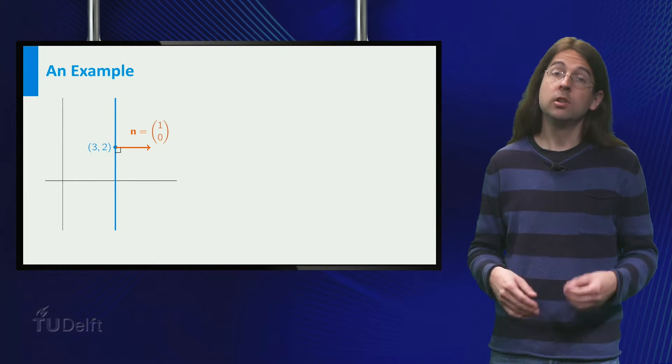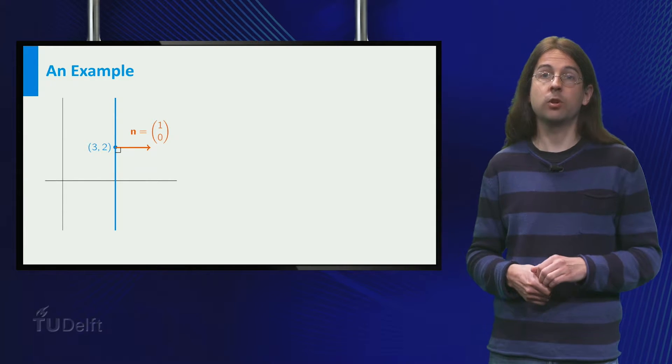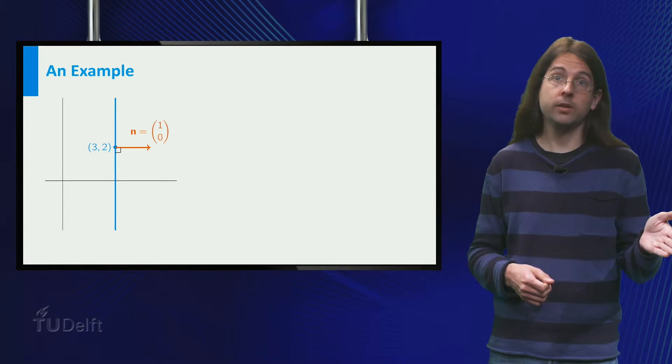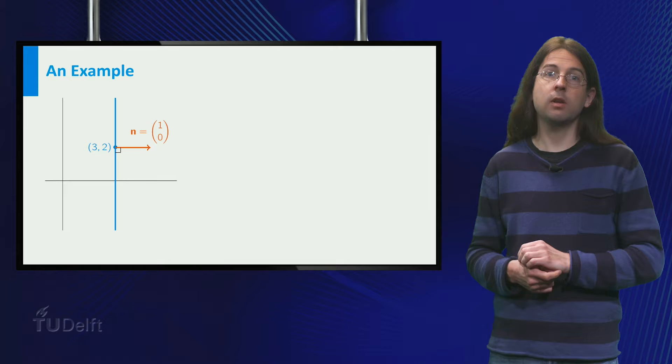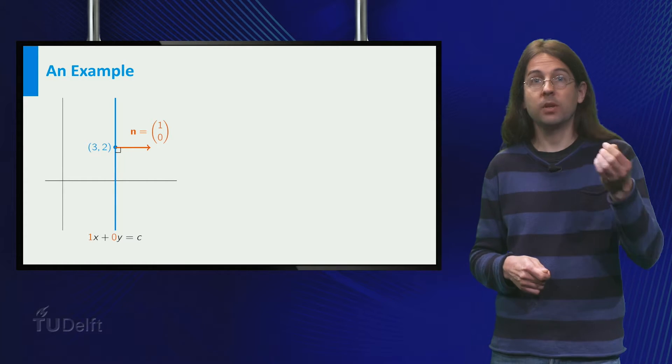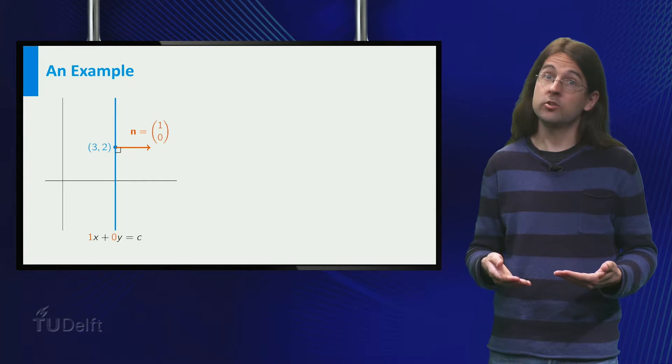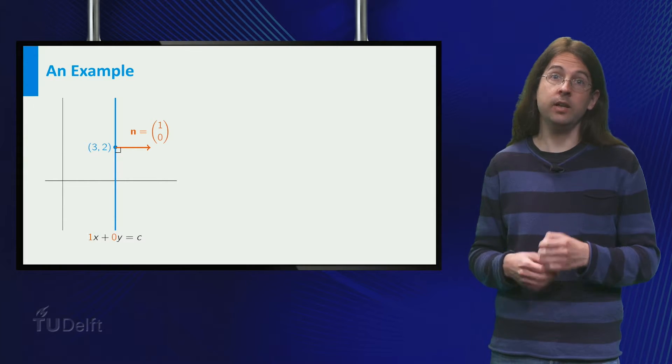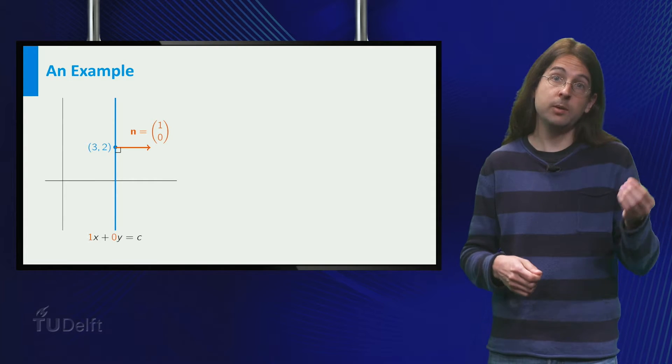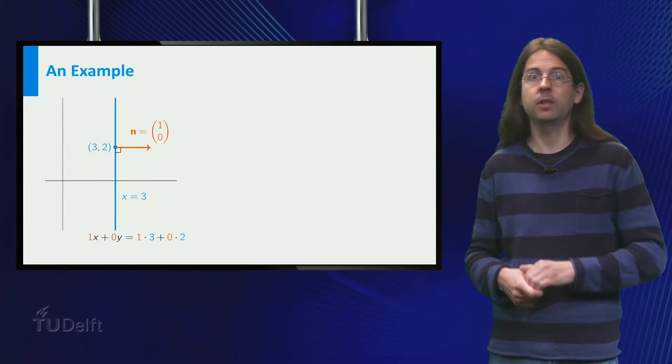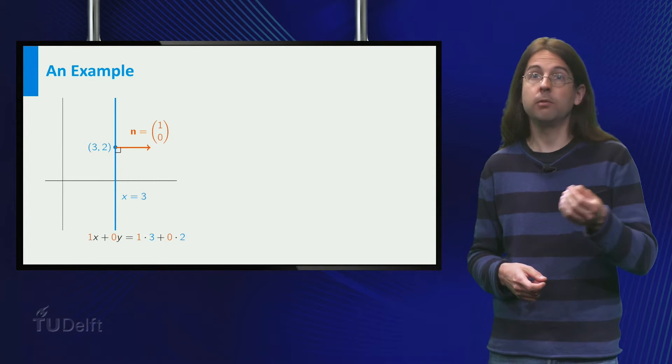For example, for the vertical line through the point, the normal vector is one zero, so a equals one and b equals zero. Thus we find for the equation one times x plus zero times y equals c. To determine c, we take one point on the line, for example three two, and plug it into the left hand side, which gives one times three plus zero times two equals three. Which is exactly the dot product of three two with one zero.